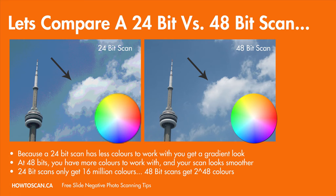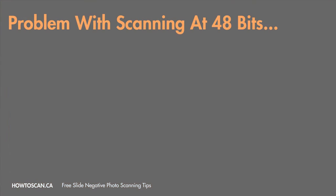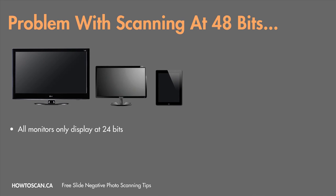But there's a problem. It makes sense to scan at 48 bits all the time, doesn't it? Your images will look better, have more colors, and the gradients will look smoother. But there is a big problem. The first problem with scanning at 48 bits is that most of our monitors only display at 24 bits anyway. So if you scan at 48 bits, your monitor won't even display them at 48 bits — they'll be dumbed down to 24.